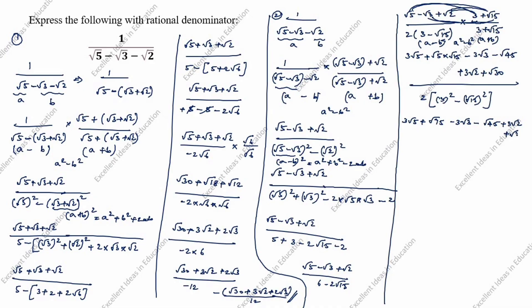3 squared is 9 minus root 15 squared is 15, giving 9 minus 15 equals minus 6. So the denominator is 2 times minus 6 equals minus 12.